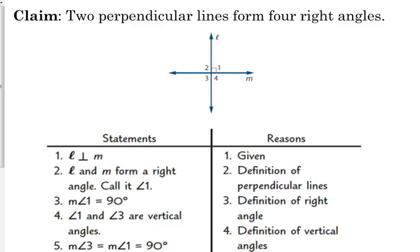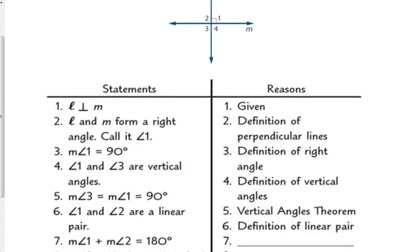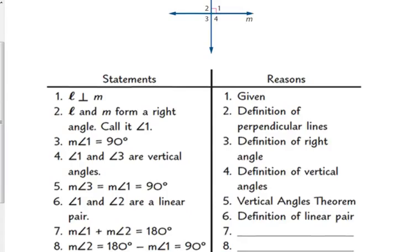Here we have the claim that two perpendicular lines form four right angles — this is something you already know is true. The proof starts by establishing that line L is perpendicular to line M, which is given. Since they're perpendicular, those lines form a right angle, named angle 1 — that's the definition of perpendicular lines. Because the measure of angle 1 is 90 degrees, that's the definition of a right angle.